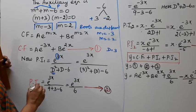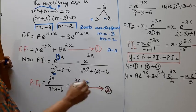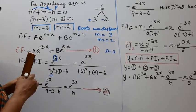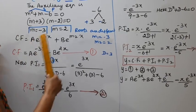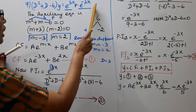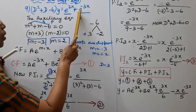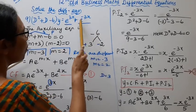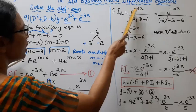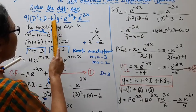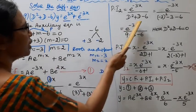That gives e^(3x) divided by 6. So particular integral 1 = e^(3x) / 6.